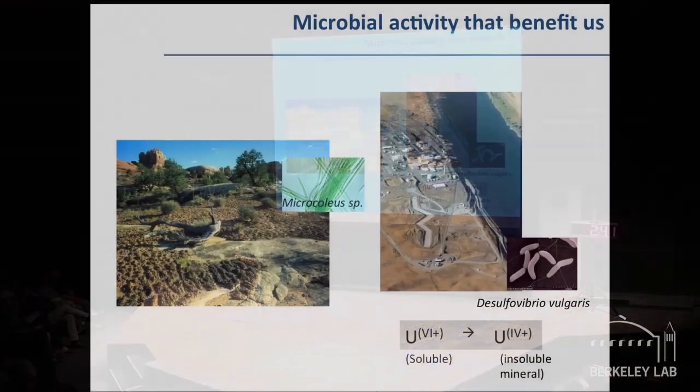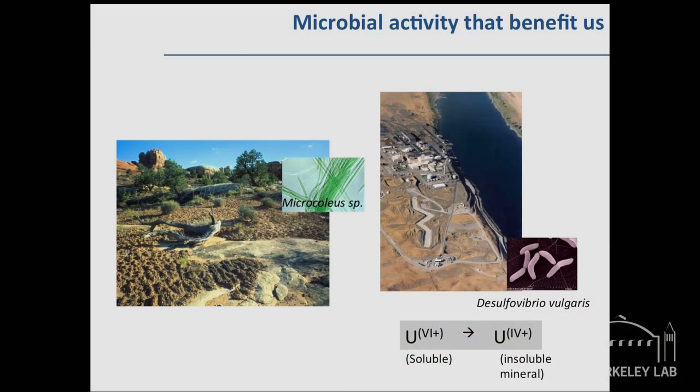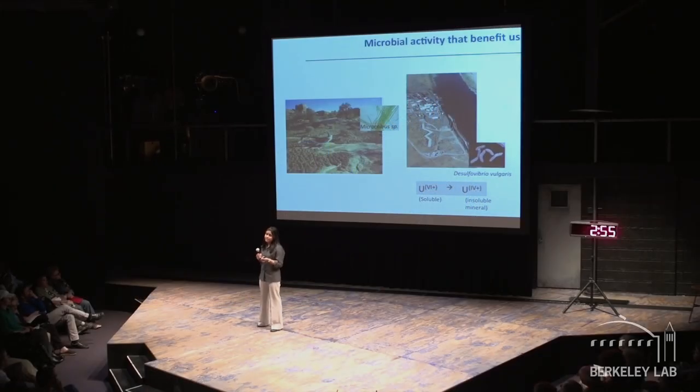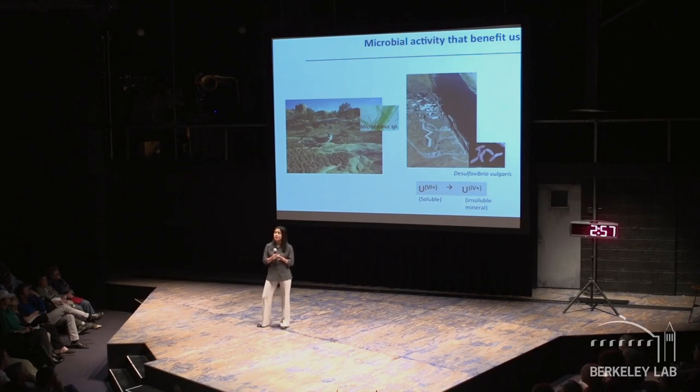The same chemistry that Desulfovibrio uses to convert sulfates to sulfide is the chemistry one would use to convert heavy metals from its oxidized states, where it's soluble in water, to its reduced form, where it's no longer soluble in water. And why is this important? Because it allows you to biocontain this very, very toxic waste that we generate in our energy and nuclear and industrial practices. And it has profound implications on how we can mitigate damage in our environment and how we can live in harmony with our environments.